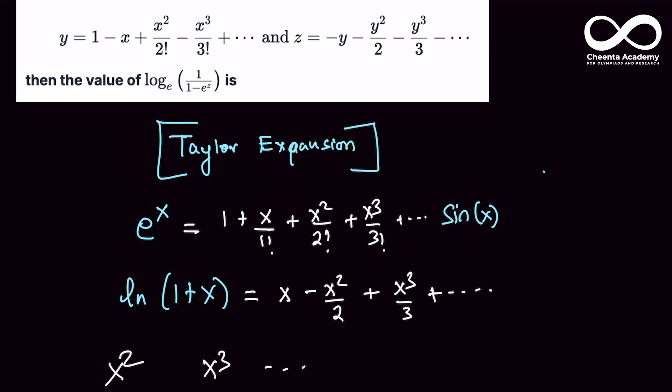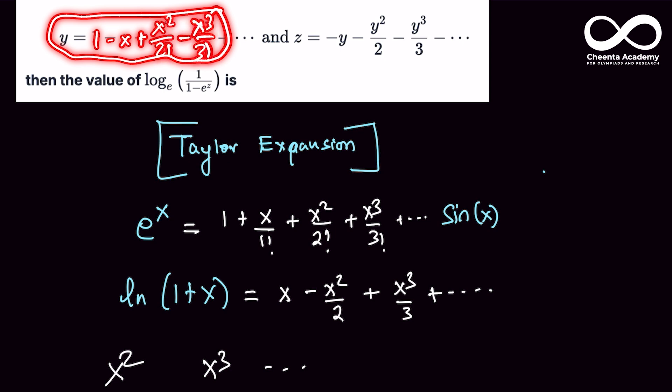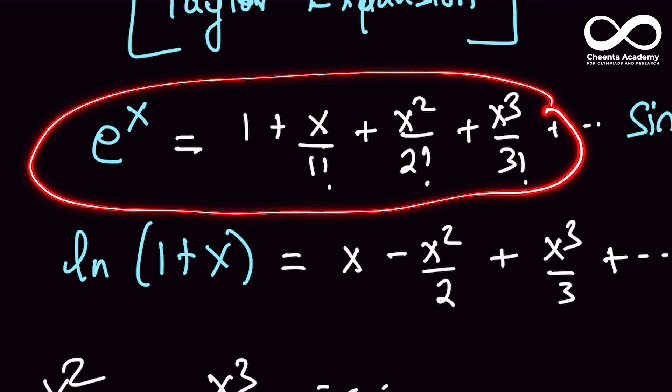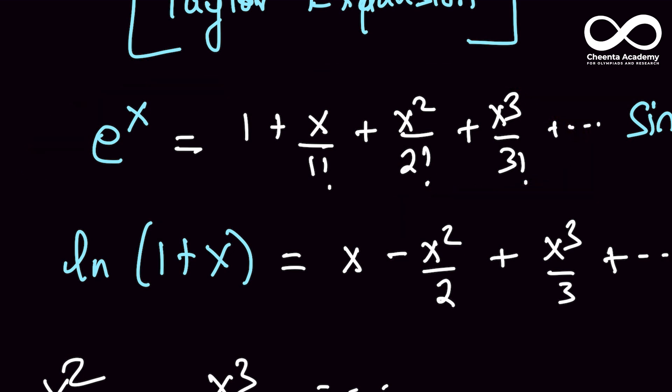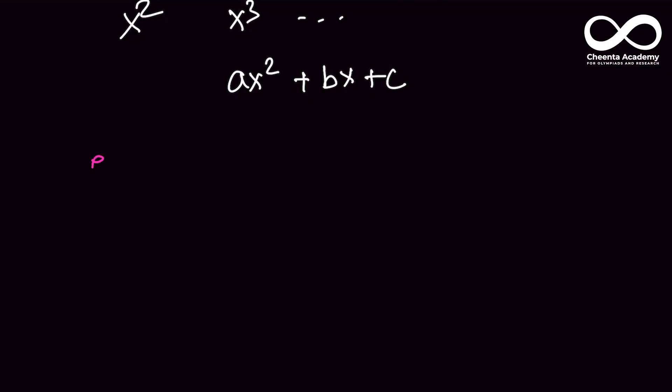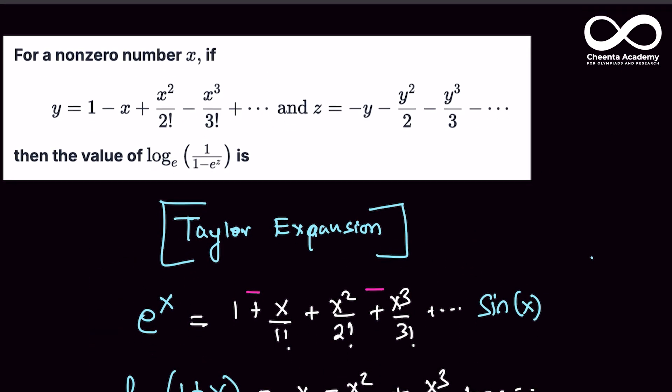So if you look at this, the first thing, the y, it's 1 minus x plus x squared by 2 factorial minus x cubed by 3 factorial, and so on. This looks almost like the Taylor Expansion of e to the power x. The only difference is that instead of everything positive, we have negative signs alternating. So what I'm going to do is, I just replace x by e to the power, I mean x by minus x, so e to the power minus x. So e to the power minus x is 1 minus x by 1 factorial, plus x squared by 2 factorial, minus x cubed by 3 factorial, and so on. So this is exactly what y is. y is e to the power minus x.